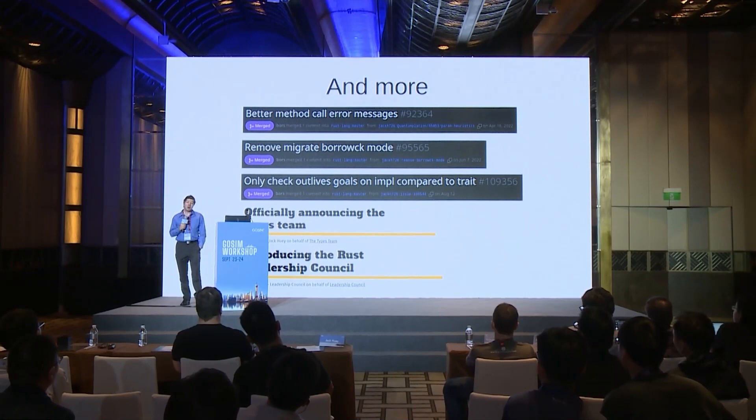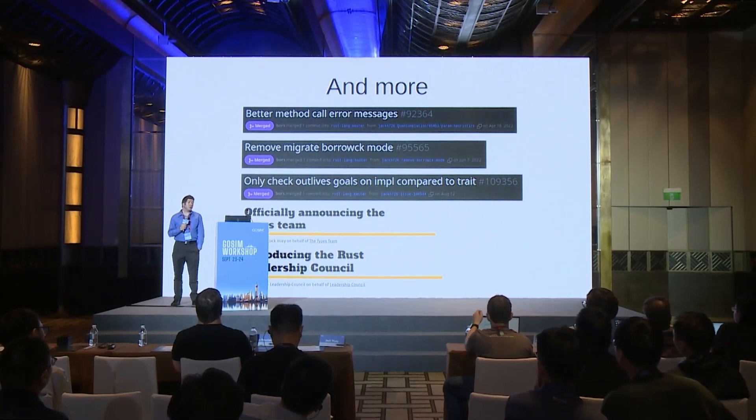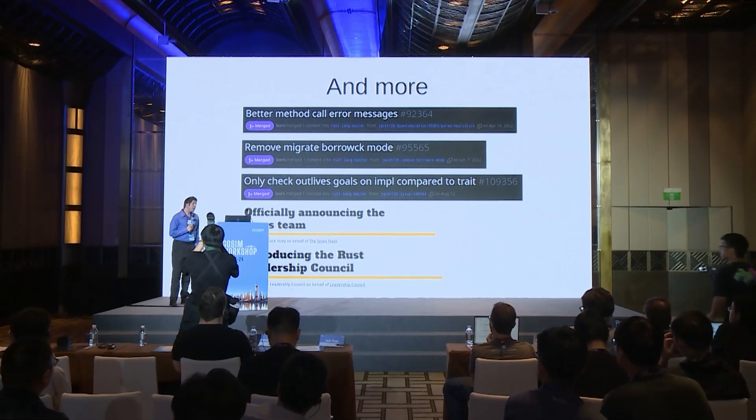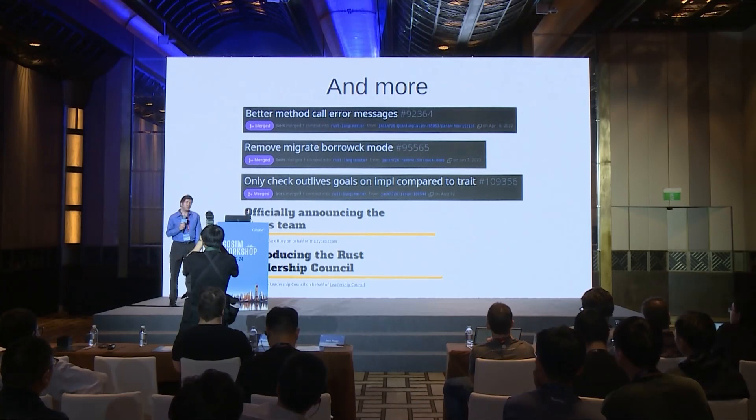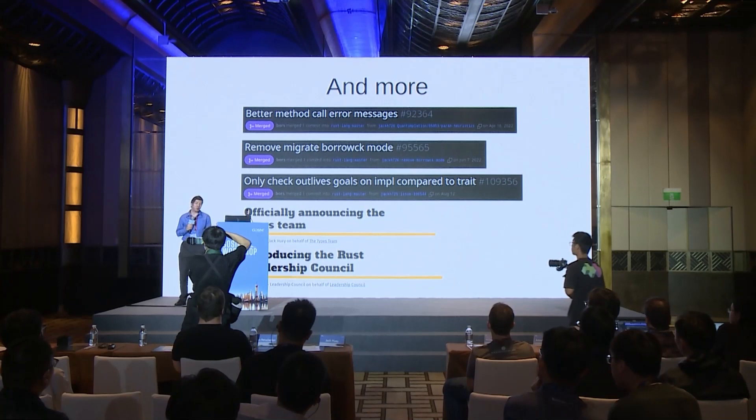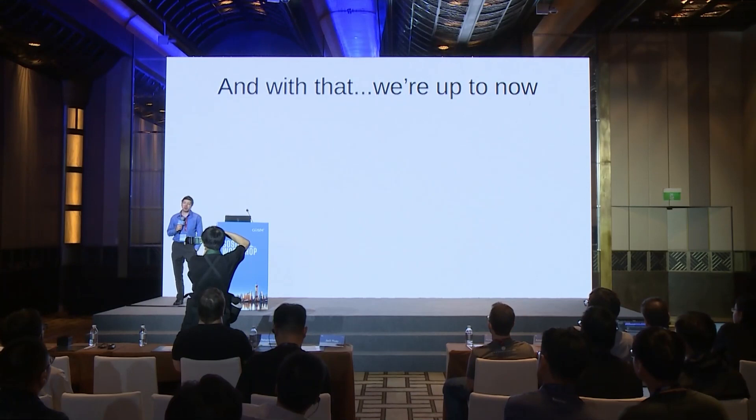During that period and since, different things have happened. I've done different types of compiler work. The Types Team got formed, replacing the Traits Working Group, essentially focused on the overall type system. The Rust Leadership Council was formed and I'm a LinkedIn representative. So while I started off just doing code, my interest and work on the Rust project has varied and diversified.